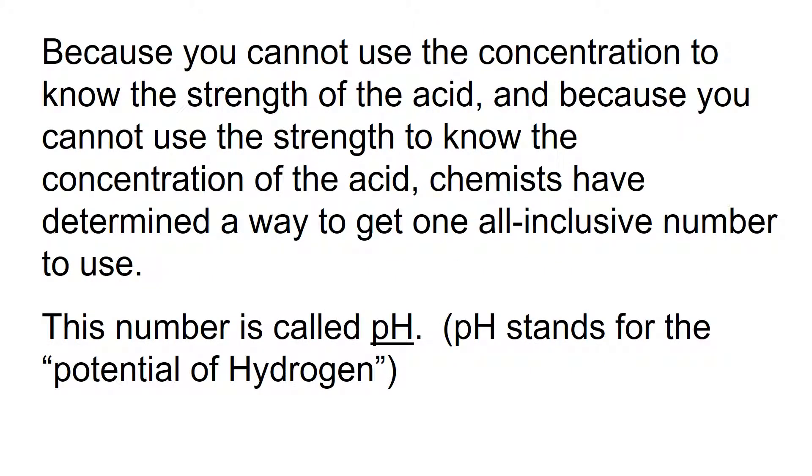We've already learned about the difference between concentration and strength of an acid or a base. Because you cannot use the concentration to know the strength of an acid, and because you can't use the strength to know its concentration, chemists determined a way to get an all-inclusive number to use, and that number is called the pH. pH stands for the potential of hydrogen.